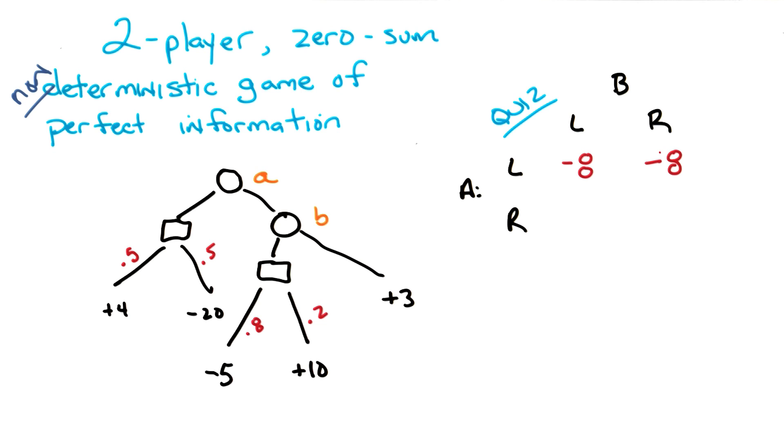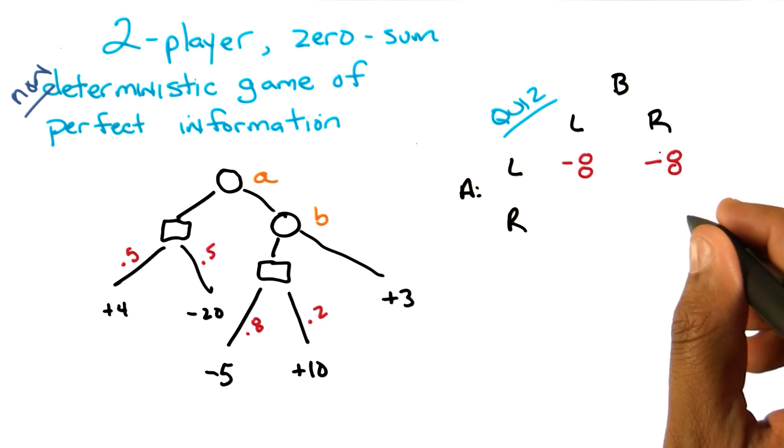The next easy one to do is if both go right. If A goes right and B goes right, then we get the 3. It's just sitting there.